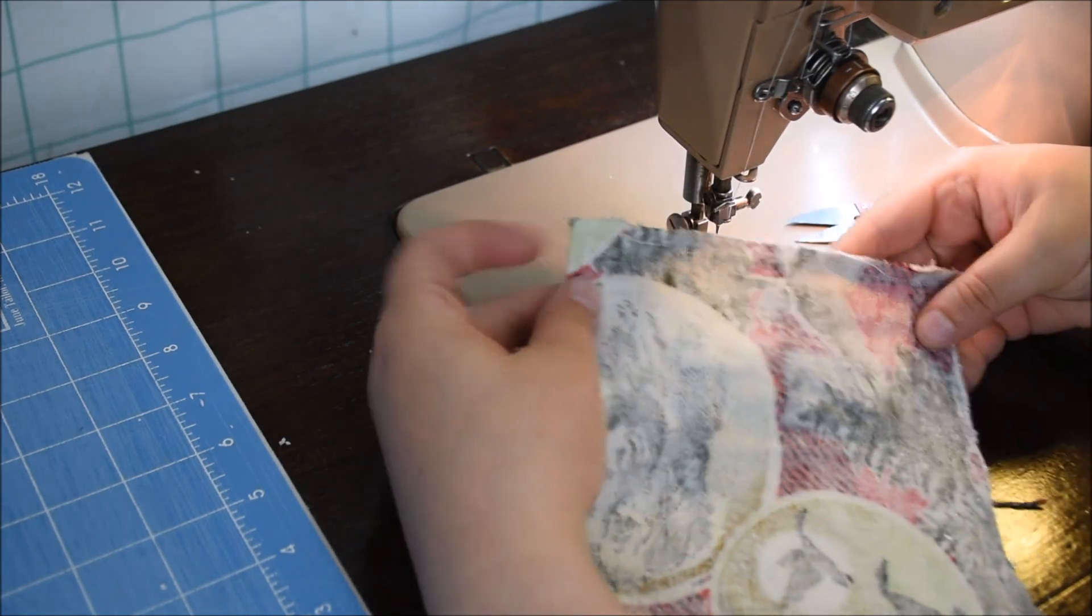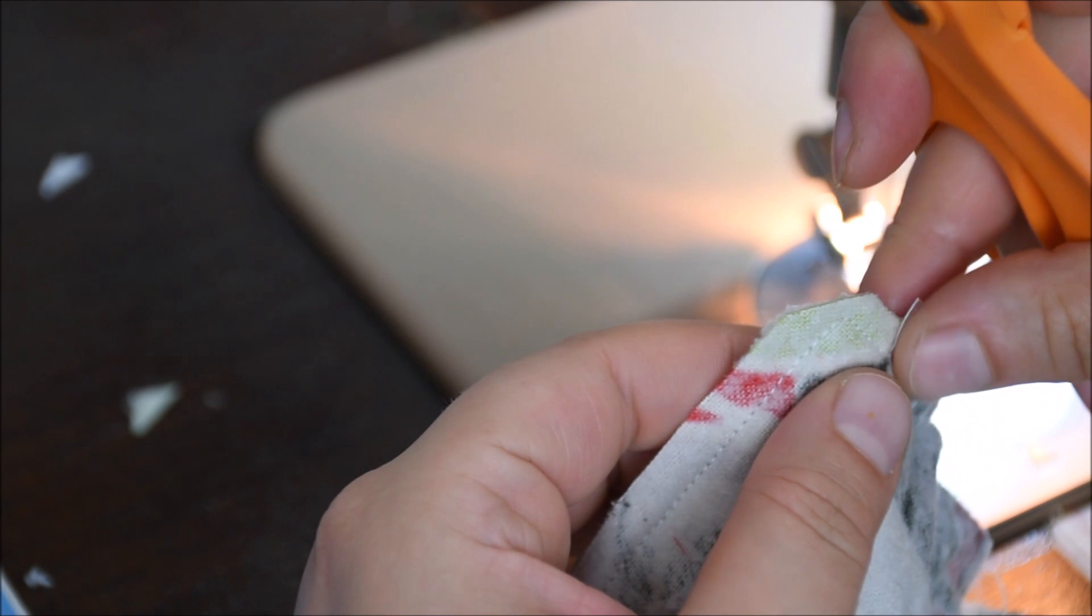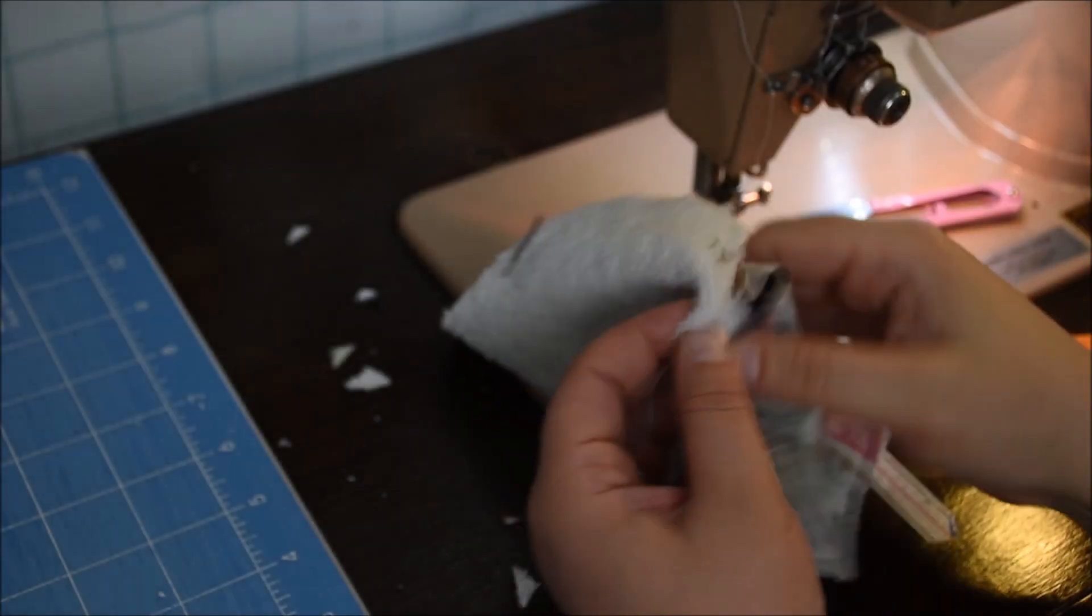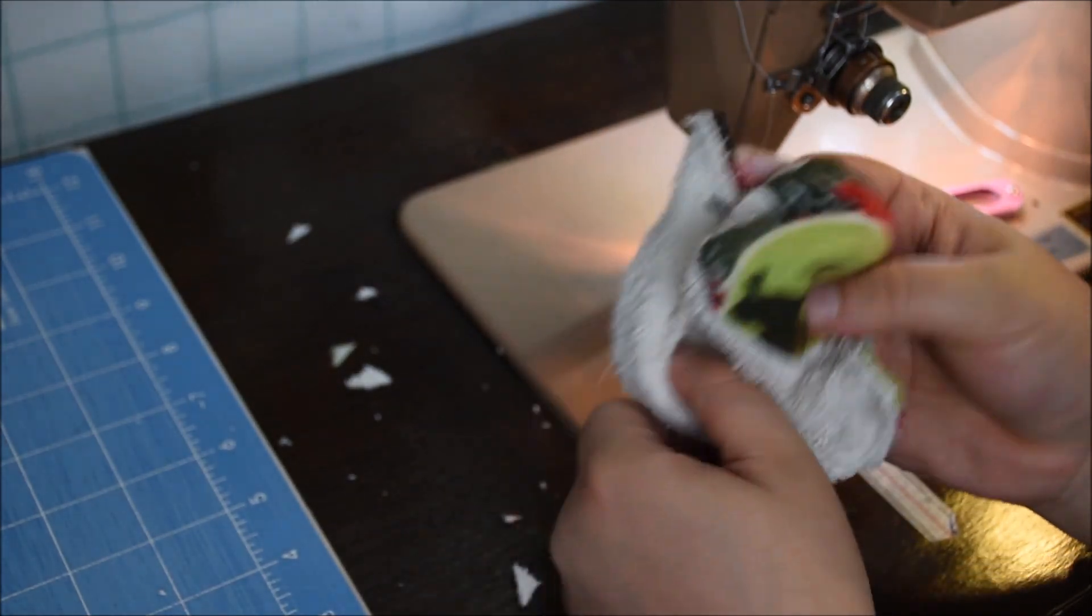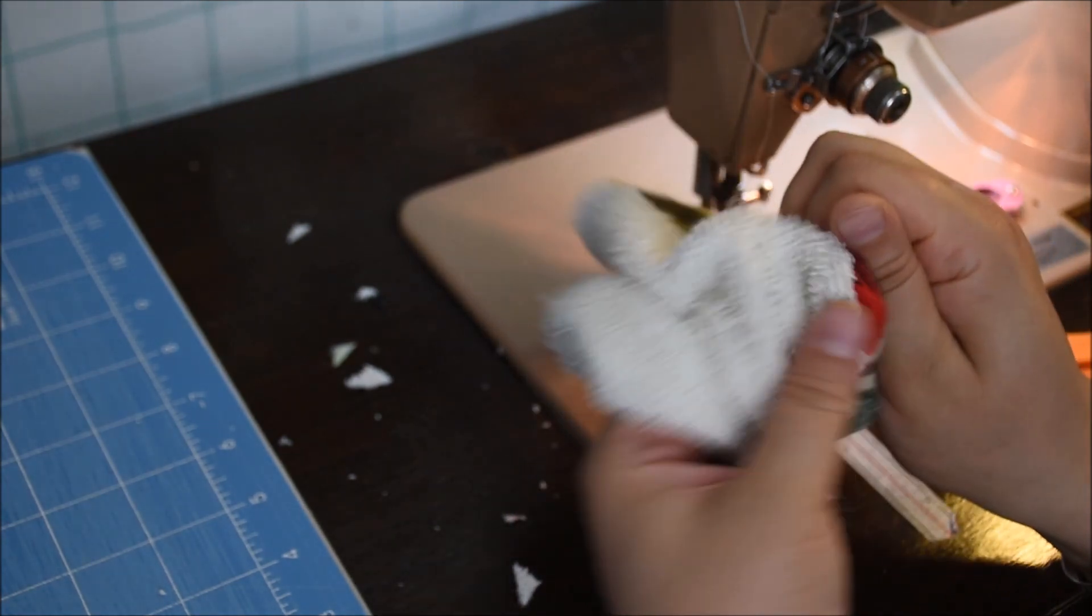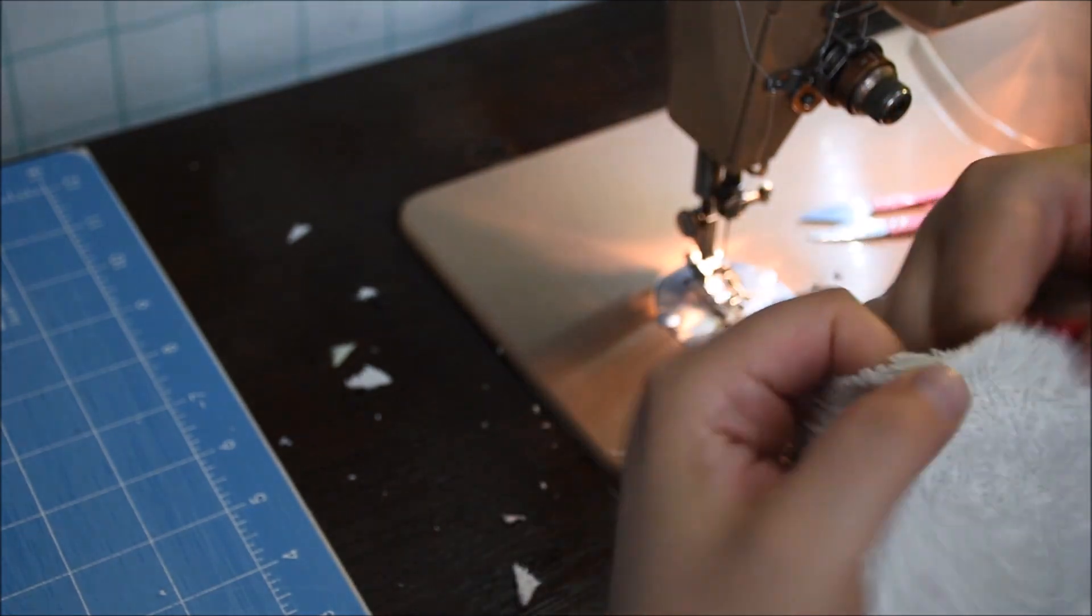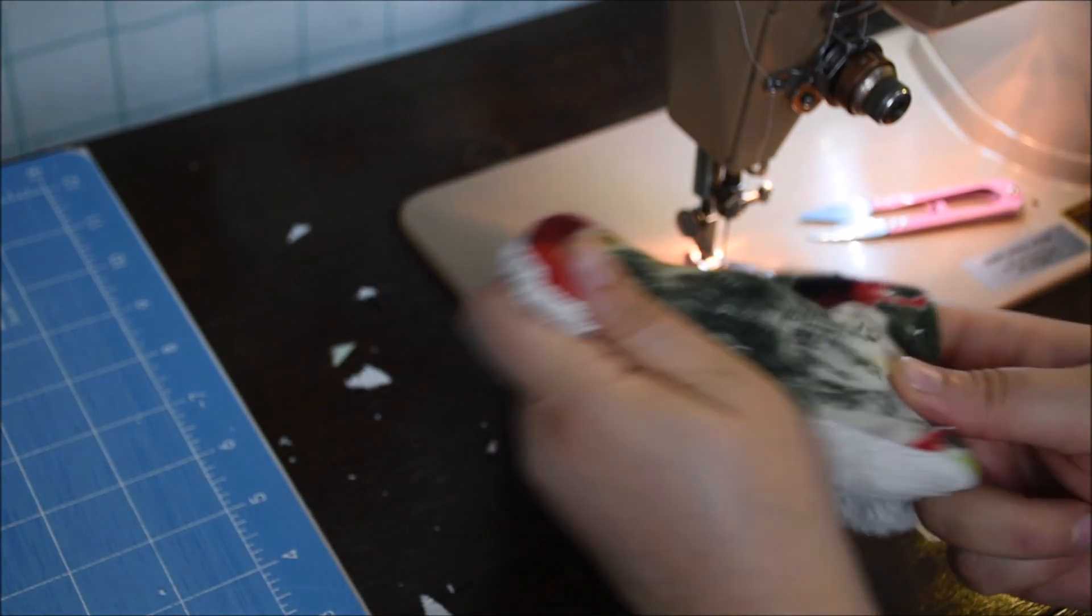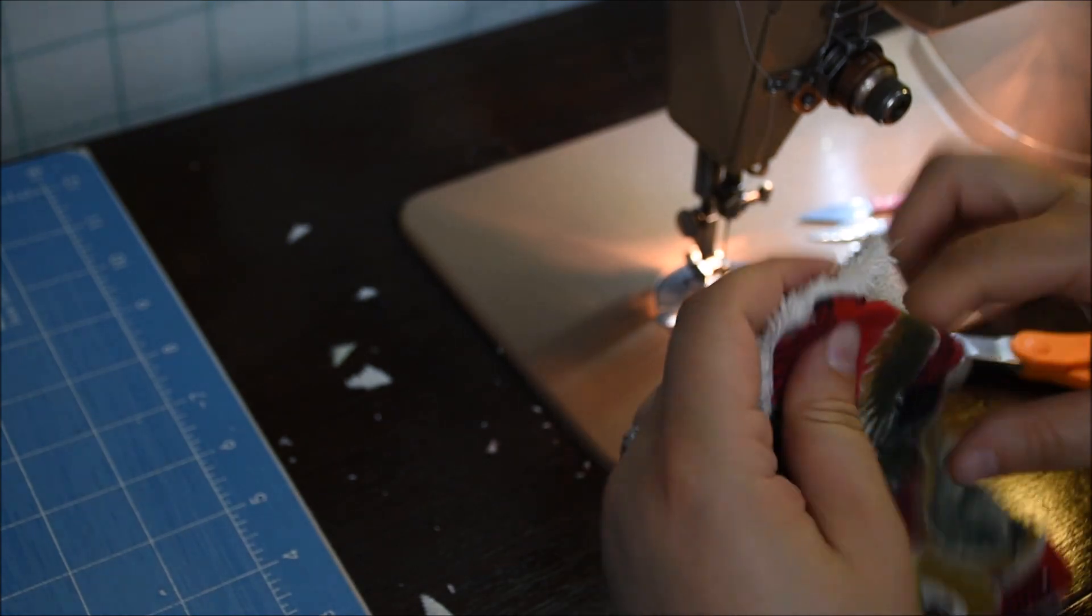Before we turn the work around, we're going to need to trim the corners. This will help make things look a little nicer. So carefully trim those corners, be sure that you don't cut the stitch line. Do that on all four corners and then we're going to turn this right side together. Push out those corners and that's going to help it look a little more square and neat. The towel or terry cloth is a little bulky, so they're not going to be perfect square corners, but trimming out some of the bulk does help.